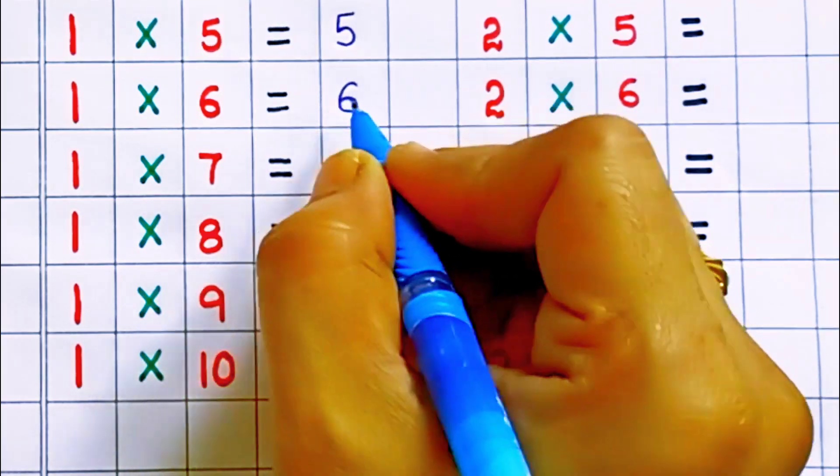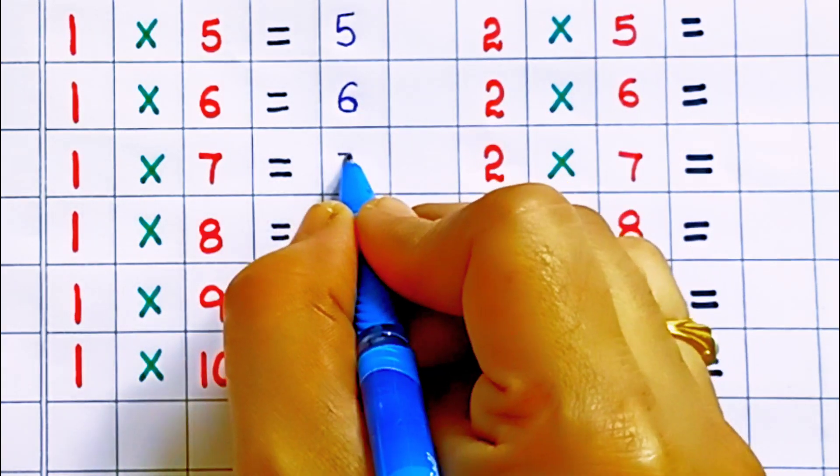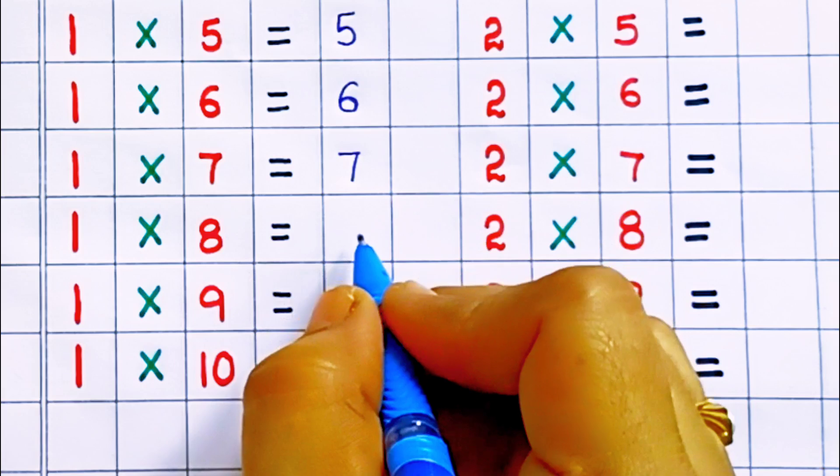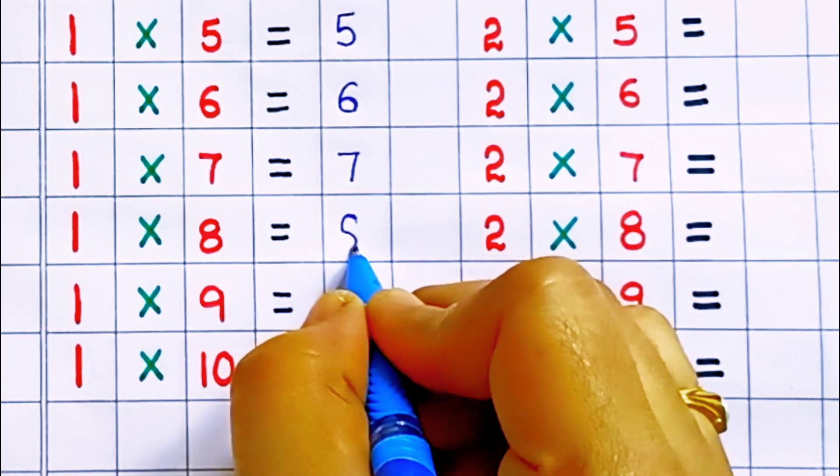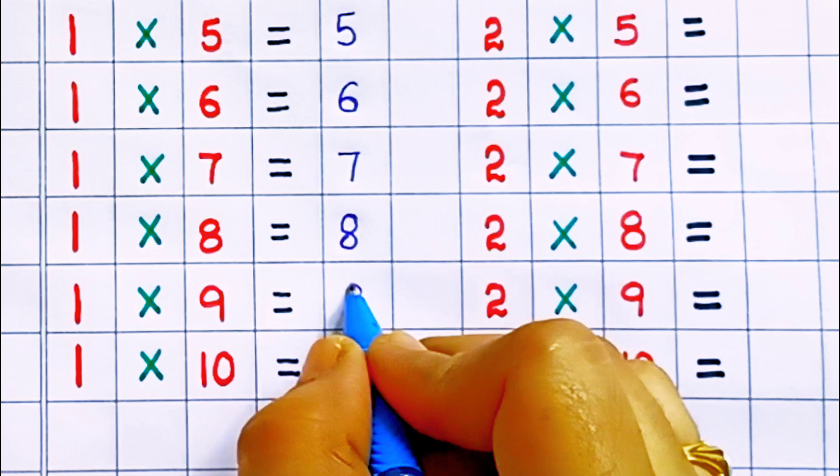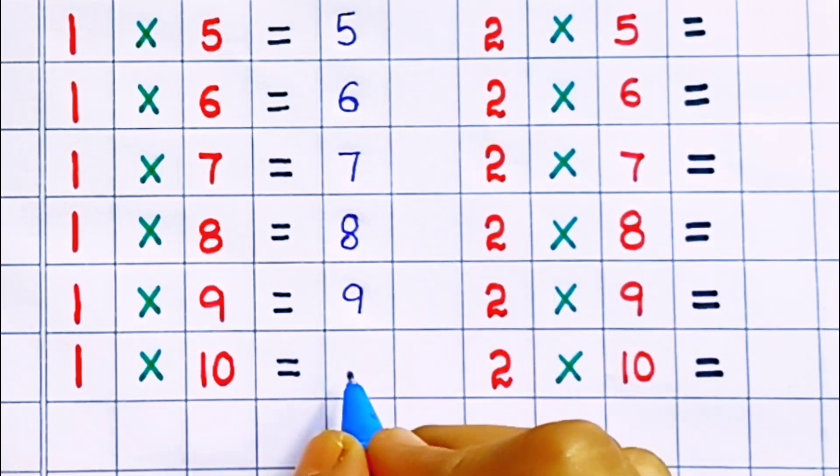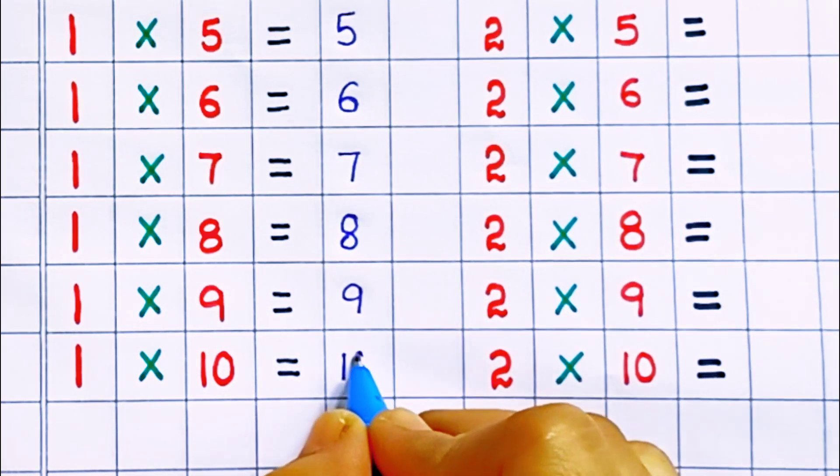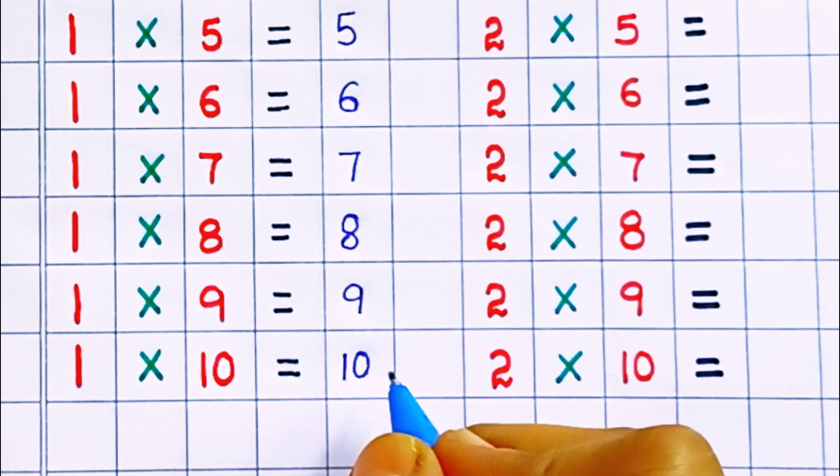1 times 6 equals 6, 1 times 7 equals 7, 1 times 8 equals 8, 1 times 9 equals 9, 1 times 10 equals 10.